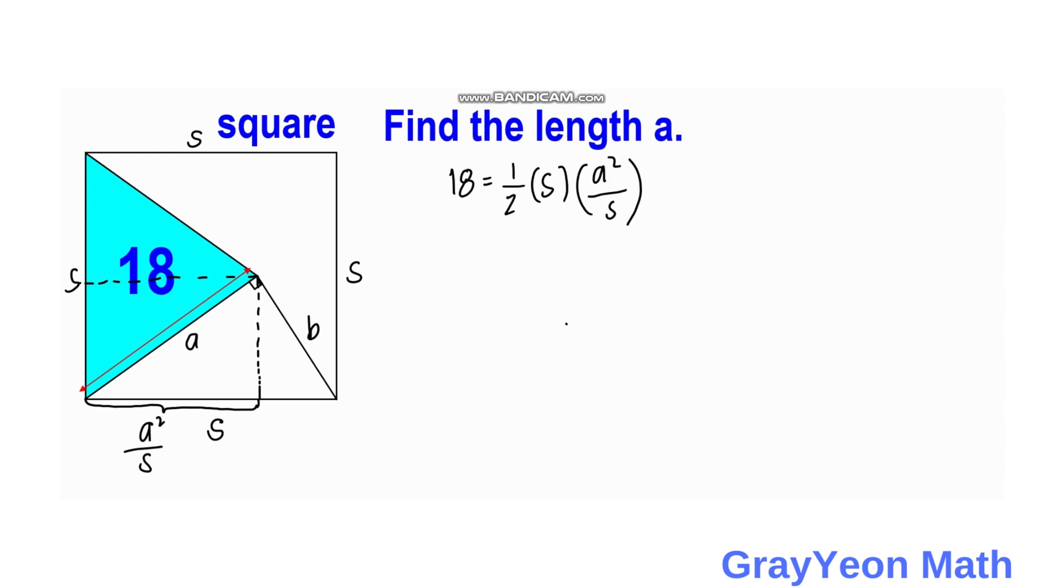We cancel this S, and of course multiply 2 times 18, so we have 36 equals A squared. If we take the square root of both sides, we have A equals 6. The value of A is 6 units, and this is our answer.